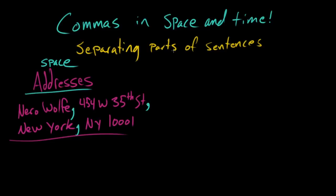And this isn't just for writing addresses, this is for referring to any point in space on the planet. So if I wanted to tell you the name of my favorite city on the planet, I would say Ouagadougou, comma, Burkina Faso. Real place, I've never been there, I would like to go someday. And that is how you use commas in space.